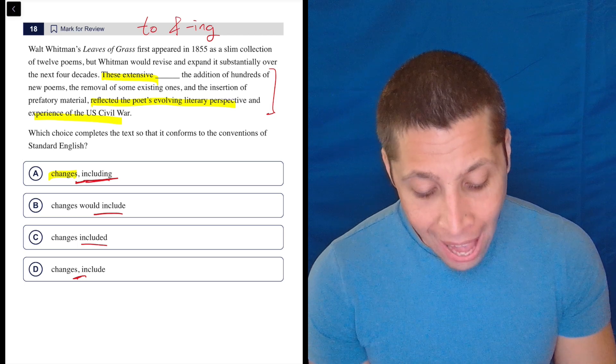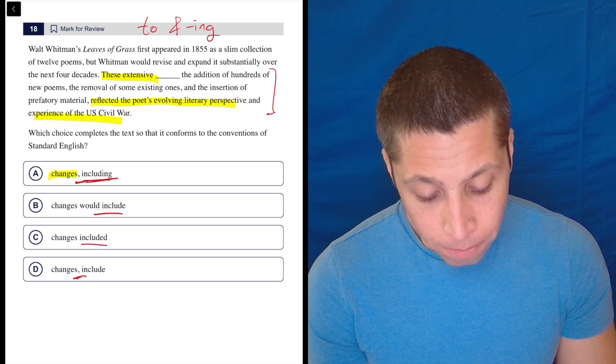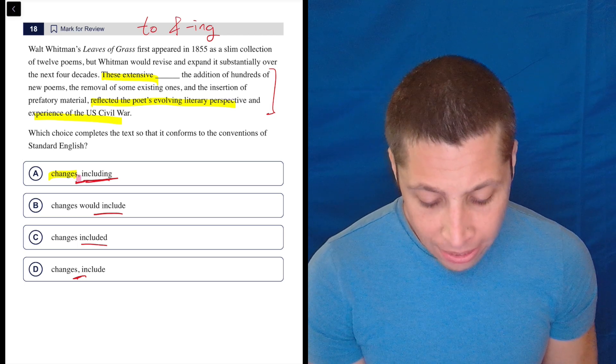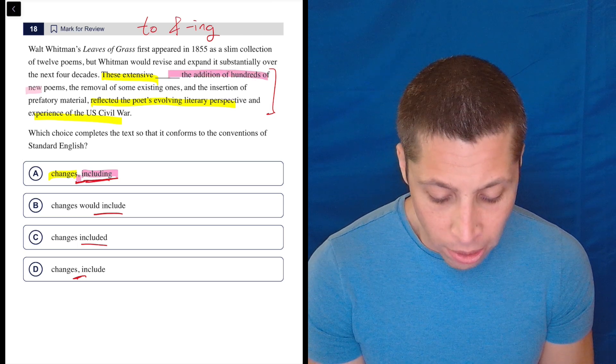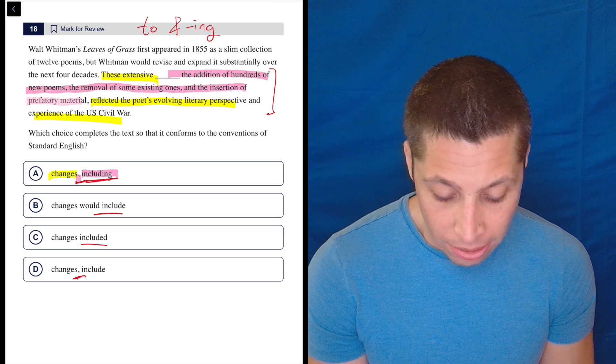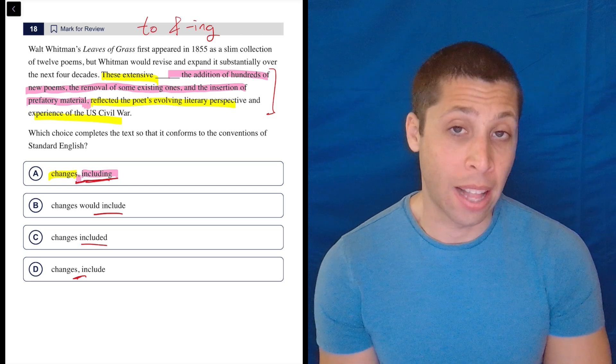Then what are we doing? We're adding in an extra clause. So the extra clause needs a comma to start it off. So 'including' is starting that extra clause, and then, hey, there's a bunch of commas there, but ignore those for a second because the comma that matters is at the end.